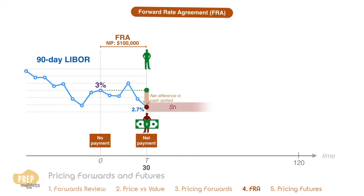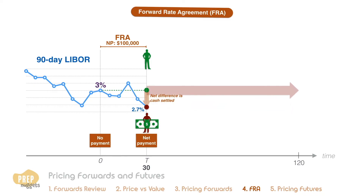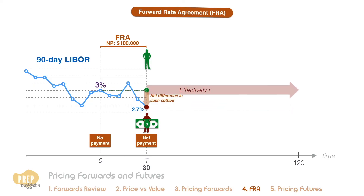Red can also lend the $100,000 that he now has at the LIBOR rate. For him, even though the rate that he lends at is 2.7%, when we take into account the net amount that he receives from the long, the effective interest that he receives is closer to the reference rate of 3%. So the short has benefited for entering the FRA in this case.